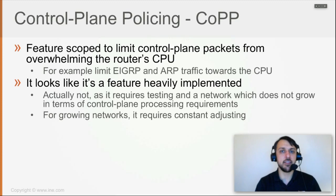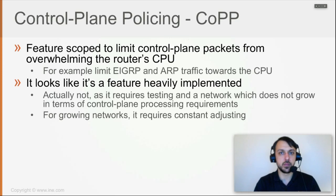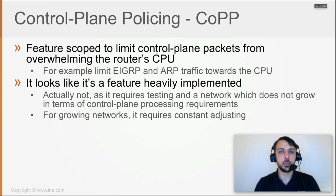CoPP is a very good feature, but in most use cases you would implement it in networks that have been configured, activated, and are running with very few changes from a number-of-devices and number-of-routes perspective — for example, to secure the control plane by limiting the number of routing protocol packets that can be accepted by the router's control plane and processed by its CPU.